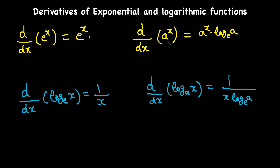The derivative of a to the x — where a is any number other than e, like two, three, or five — is just the function itself times log base e of that number, times the derivative of the power. In our case, dx over dx gives us one.